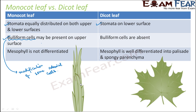This concept of buliform cells is not present in dicot leaves — there is no such modification in a dicot leaf. Additionally, the mesophyll is not differentiated at all in a monocot leaf; the entire mesophyll is just parenchyma cells. Whereas in a dicot leaf, the mesophyll is well differentiated into palisade parenchyma and spongy parenchyma.